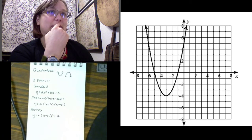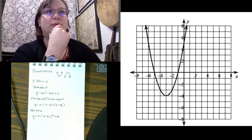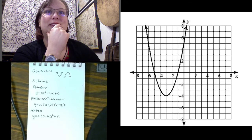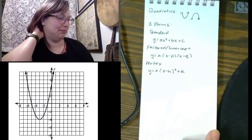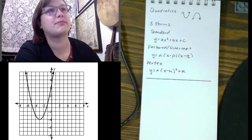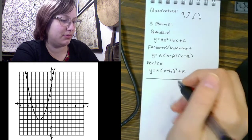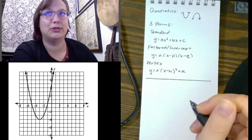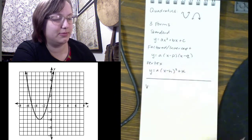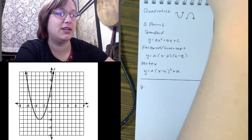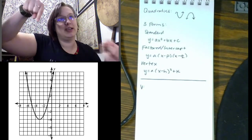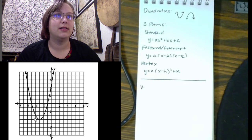Okay, so I have this graph here and there are some important parts of it. Let me rearrange so I have more space. Let's start with vertex form because it's fairly simple to find from a graph. Vertex form is about where the vertex is, and the vertex is the absolute bottom or absolute top of the graph. I can show you on my mouse — for this graph, the vertex is right here.